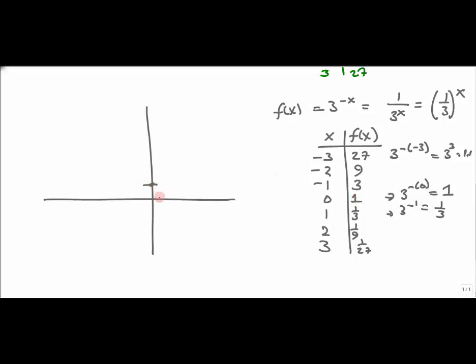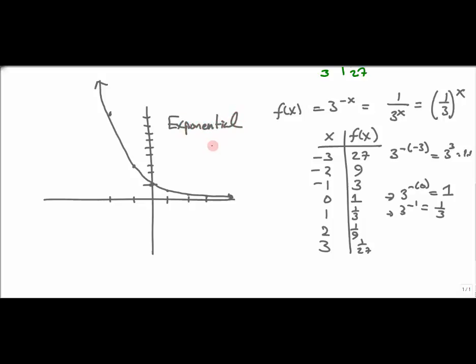Plotting these points: the hinge point (0, 1) is important for both graphs. Plugging in 1 gives 1/3, and 2 gives 1/9 — getting closer and closer to the x-axis but never crossing. At negative 1, I'm up at 3, and at negative 2, I'm at 9. This is the mirror image of exponential growth and is called exponential decay — like the carbon-14 dating used to predict the age of ancient artifacts.